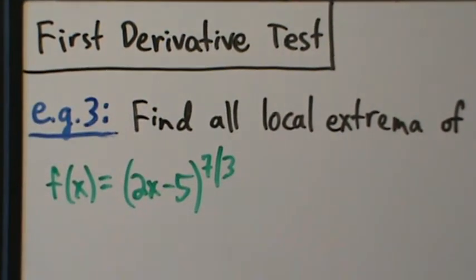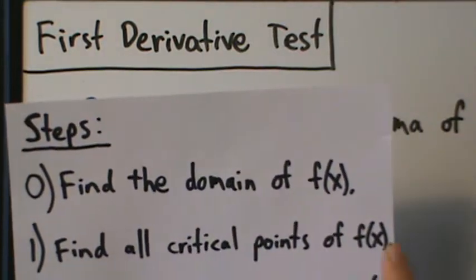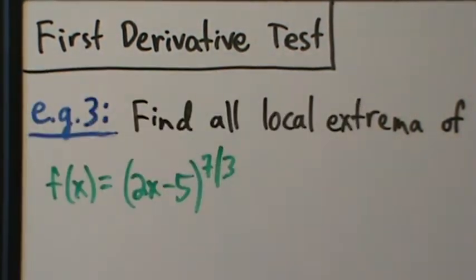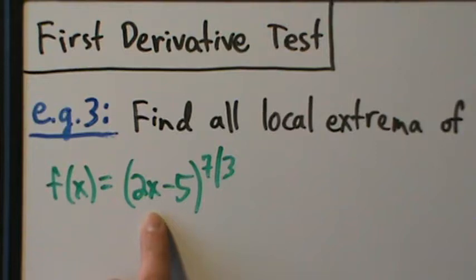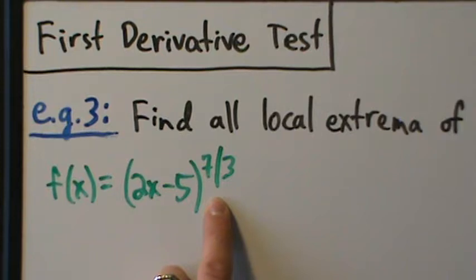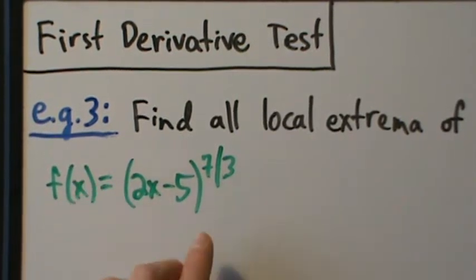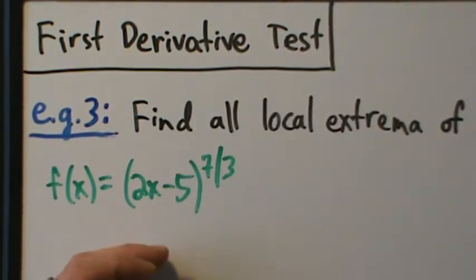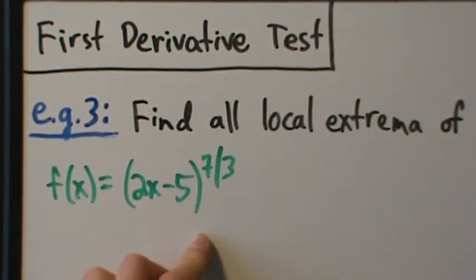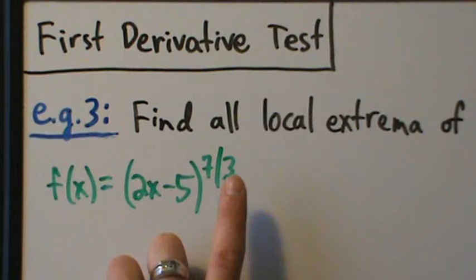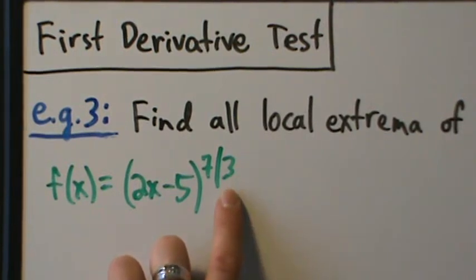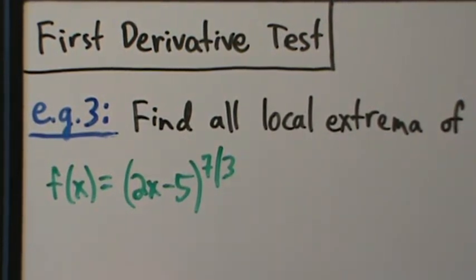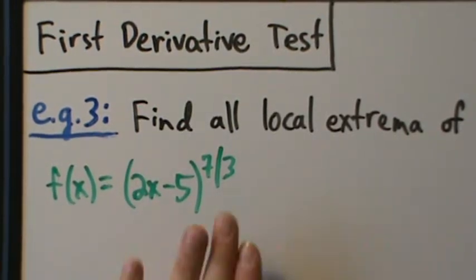Step 0: find the domain of f(x), because remember a critical point has to be in the domain of f. Here we're taking x, multiplying by 2, subtracting 5, and raising to the 7/3. There are no domain restrictions — you can't take logs of 0 or negative numbers, can't divide by 0, and can't take even roots of negative numbers. But we're taking an odd root, the cube root, so we can take that of any number. The domain is all real numbers.